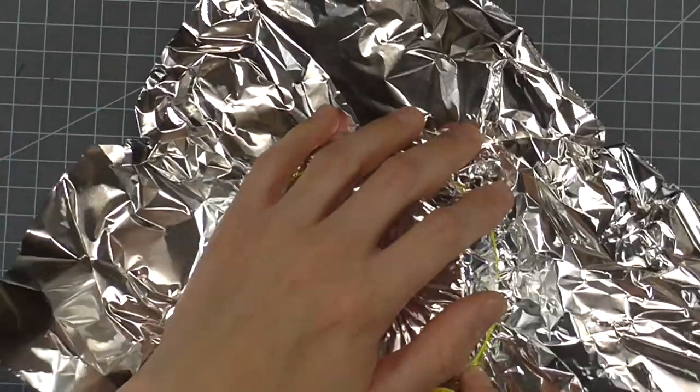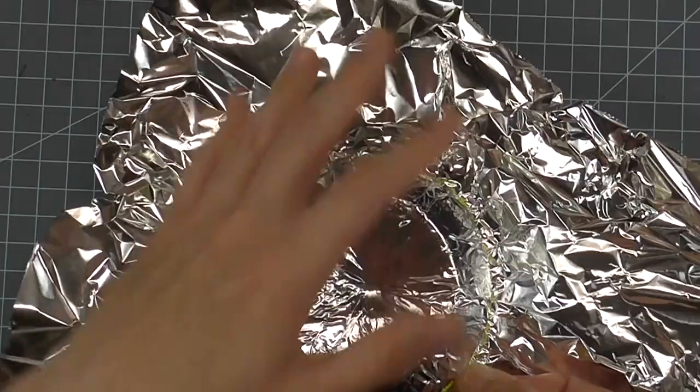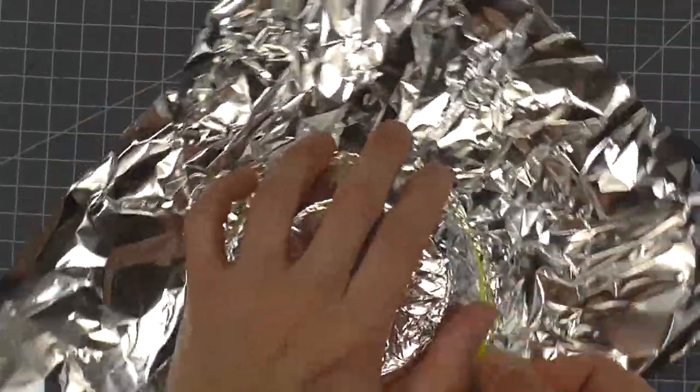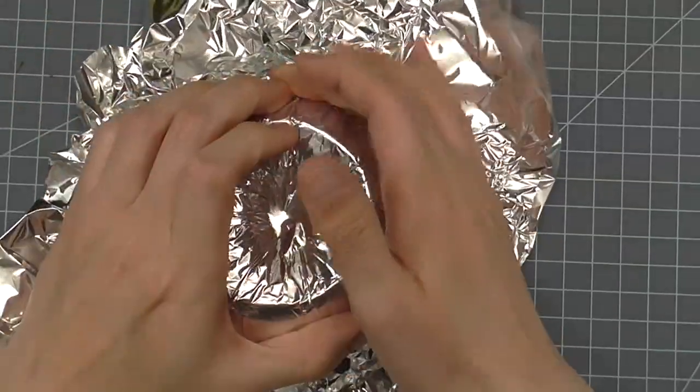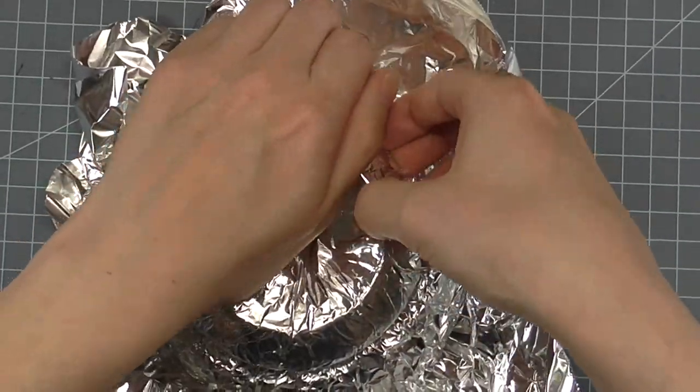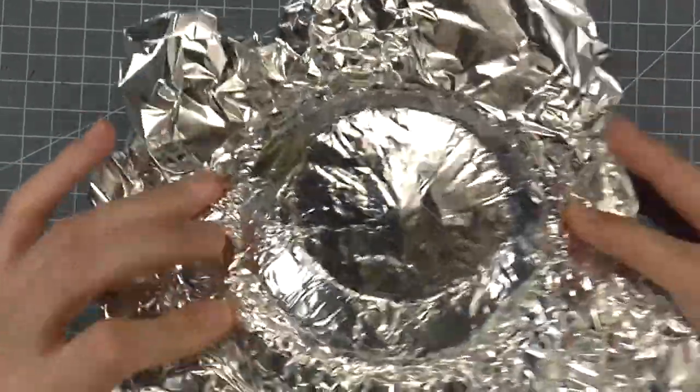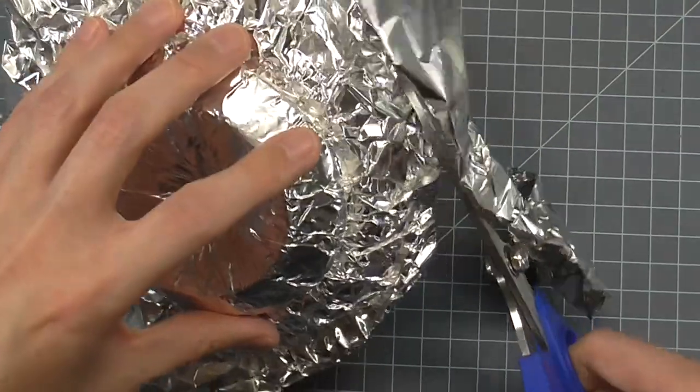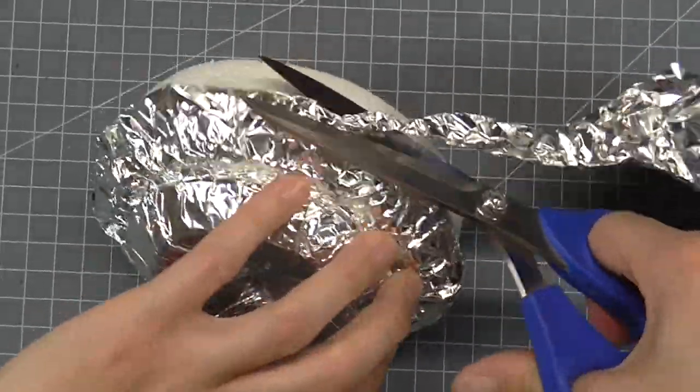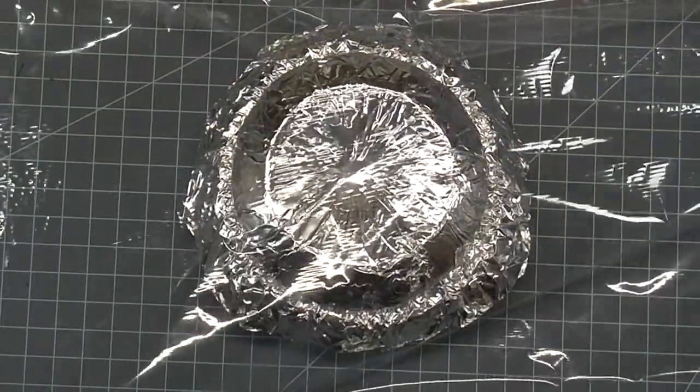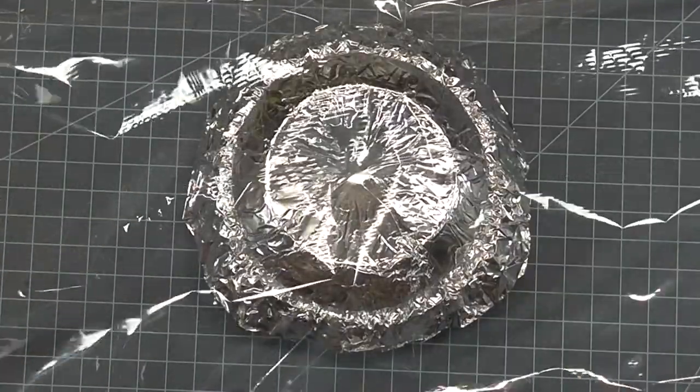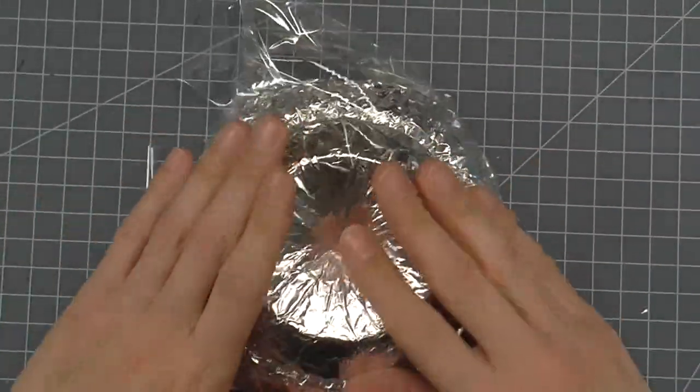Then use the blocking tie to cinch it in further. Continue smoothing the aluminum foil along the edge of the block. Trim off any excess foil past the block. Cover the block with cling wrap. The block is now ready to use.